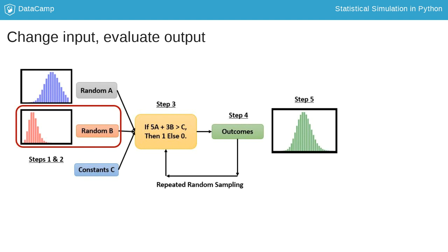For example, we might want to ask how the outcome will change if the probability distribution of B changes. In this case, we would just simulate a new set of outcomes after changing B.